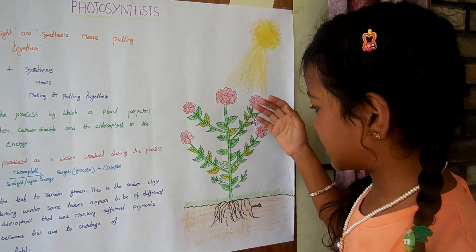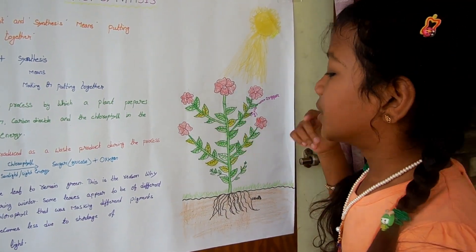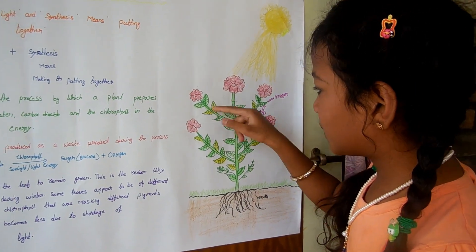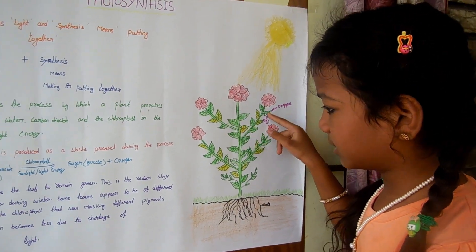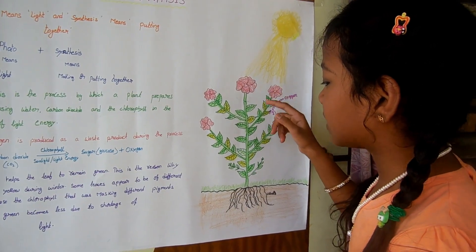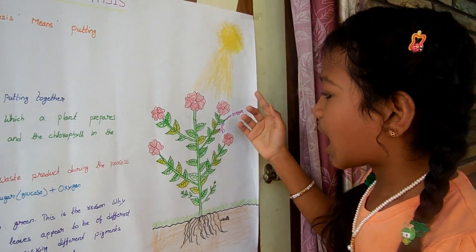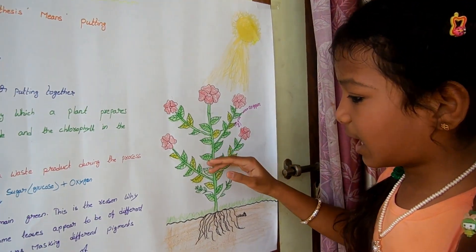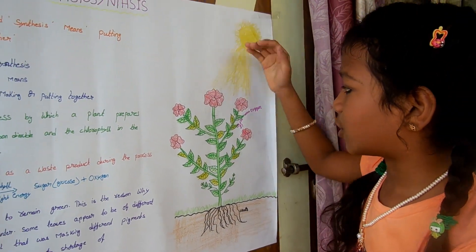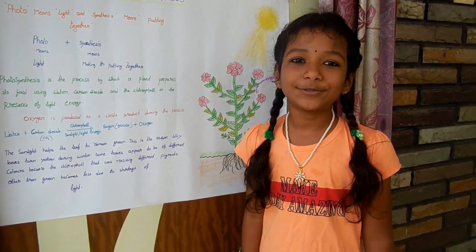This is the reason why leaves turn yellow during the winter. Some leaves appear to be different colors because the chlorophyll that was masking the different pigments other than green becomes less due to the shortage of light. Thank you!